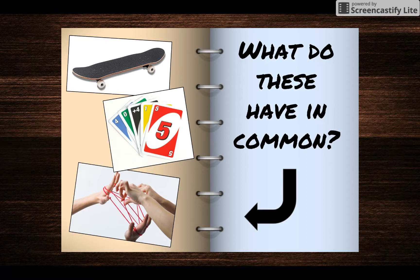So the next question is, what do these three things have in common? We've got Cat's Cradle, Uno, and a skateboard. These three have a unique connection that a lot of people don't pick up on right away, but many associate it with their childhood. What these three things have in common is that most people learn these from other children.